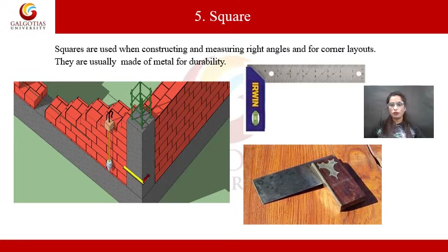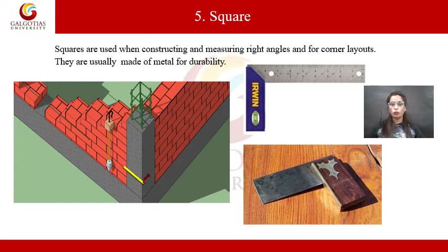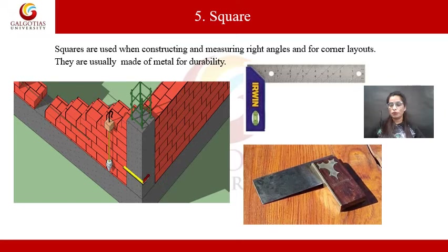The next masonry tool is the mason square. The mason square is an instrument used to ensure that two perpendicular surfaces are at right angles with each other. It is a useful tool to carry around to get a standard reference of 90 degrees to verify the accuracy of a corner. Squares are used when constructing and measuring right angles and for corner layouts, and these are made of metal for durability.